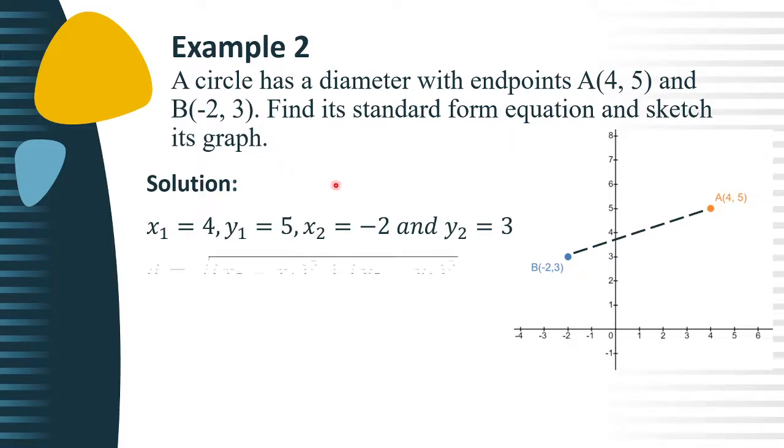Using the distance formula, d equals the square root of x sub 2 minus x sub 1 square plus the quantity y sub 2 minus y sub 1 square, we can determine the length of the diameter of the circle.